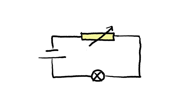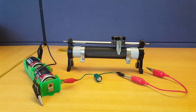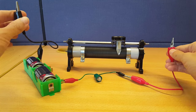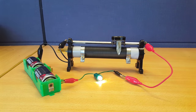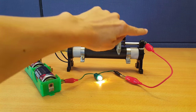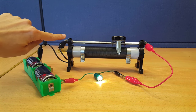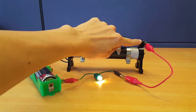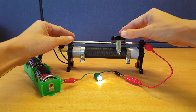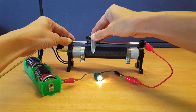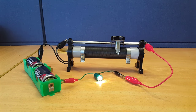So how can we connect this thing up to provide a variable resistance? If you connect it this way, then these two points are always shorted by this thick, fat metal rod. So no matter how you move the tab, the resistance between these two points is always zero.